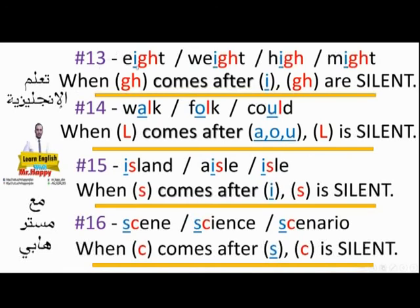Rule thirteen: eight, weight, high, might — the GH comes after I, so GH is silent. Rule fourteen: walk, folk — don't say 'folk' with the L; could, would, should — we don't say 'cold', 'would', 'should' with the L sound, it's 'could', 'would', 'should', 'folk', 'walk'. Why? Because L comes after A, O, or U.